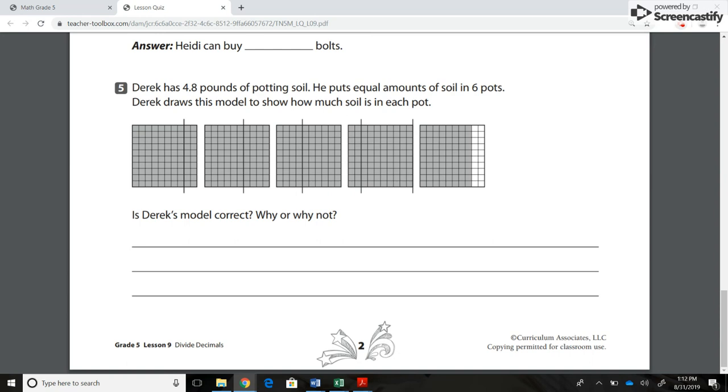Number 5. Derek has 4.8 pounds of potting soil. He puts equal amounts of soil in 6 pots. Derek draws this model to show how much soil is in each pot. Is Derek's model correct? Why or why not?